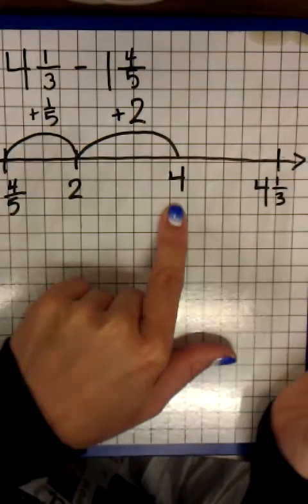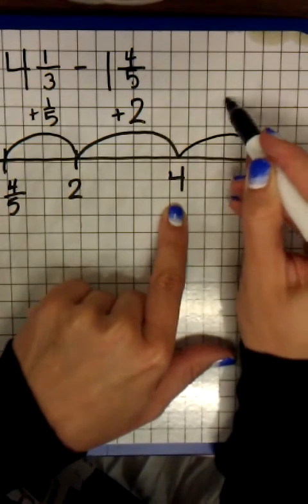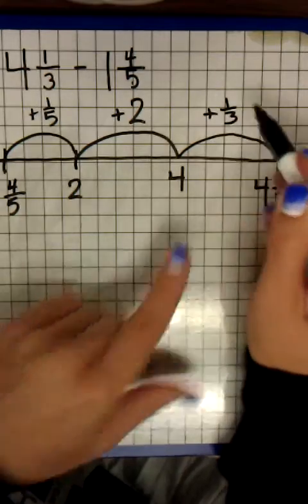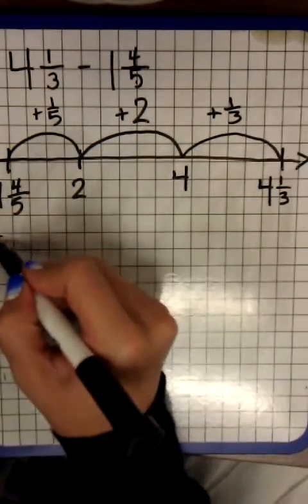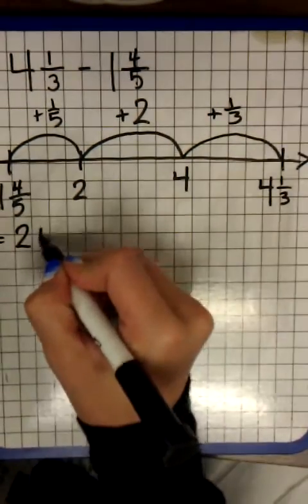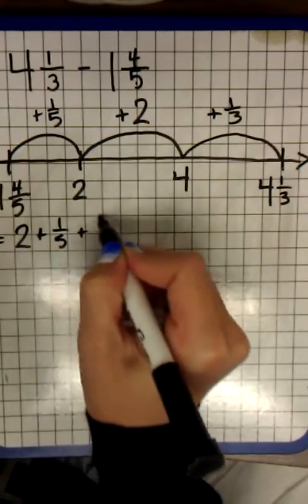Now from four to four and one third, it's a jump of one third. Now I'm going to add up all of my jumps. I have two plus one fifth plus one third.